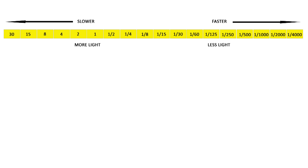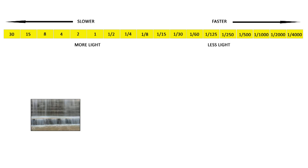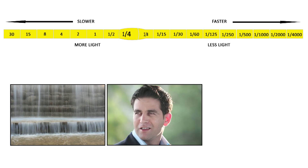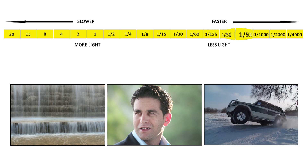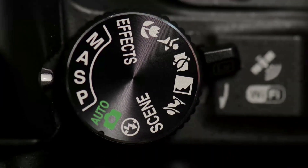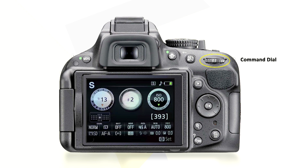Fast shutter speeds are good for freezing motion as well as for brightly lit situations. For milky or motion effects on flowing water, use a slow shutter speed. For everyday activities like walking, talking, or sitting, use a standard shutter speed ranging from 1/60th to 1/125th of a second. For very fast-moving subjects, use a high shutter speed. To change the shutter speed on this camera, go to S mode and rotate the command dial — you will see the shutter speed changing in the camera interface.